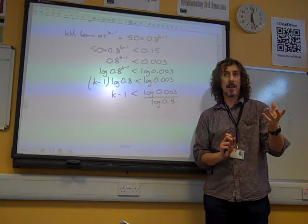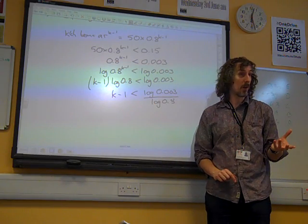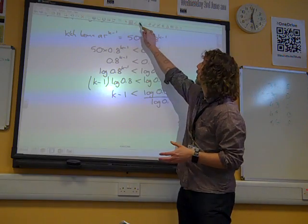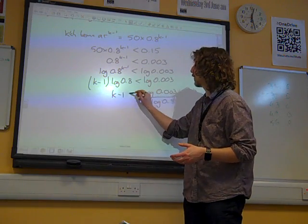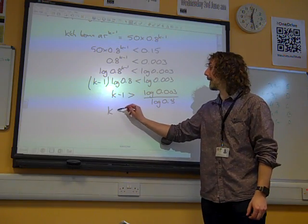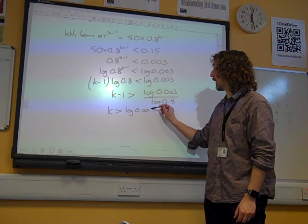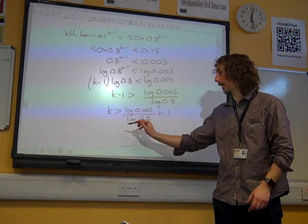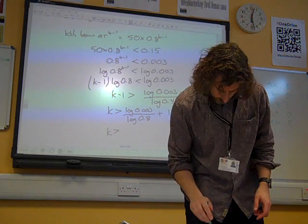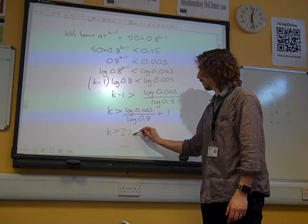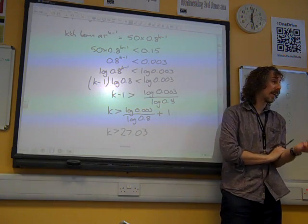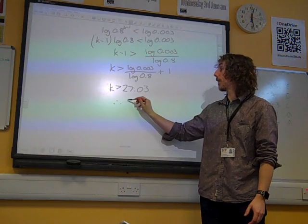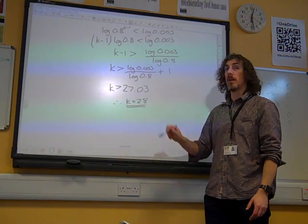Remember that if you divide by a negative number, you've got to flip the inequality sign. And we don't always notice it with logs, but if we're doing the log of something between 0 and 1, then that's negative. Log 0.8 is negative. So I should have swapped that over at that point to say that. So K is greater than log 0.003 over the log of 0.8 plus 1. And if you carefully put that into your calculator, that is 27 point something, 27.03. And of course we are saying that K has to be greater than 27.03. And K is an integer. K is the number of terms.